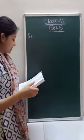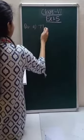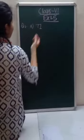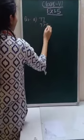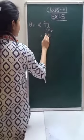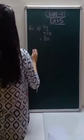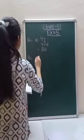Now exercise 1.5, question number 1: round off each of the following numbers to its nearest 10. The number is 77. We see the last digit — 7 is greater than 5, so we put 0 in the place of ones and add 1 in the place of tens. The answer is 80.